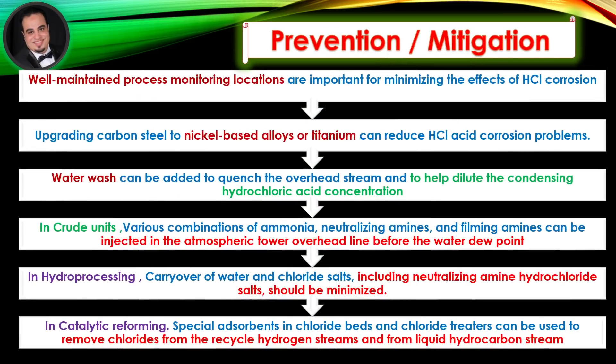Prevention and mitigation: well-maintained process monitoring locations are important for minimizing the effects of hydrochloric acid corrosion. Upgrading carbon steel to nickel-based alloys or titanium can reduce HCl corrosion problems. Water wash can be added to quench the overhead stream and to help dilute the condensing hydrochloric acid concentration. In crude units, various combinations of ammonia, neutralizing amines, and filming amines can be injected in the atmospheric tower overhead line.